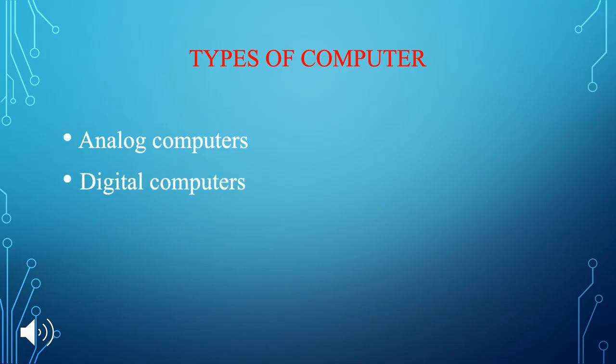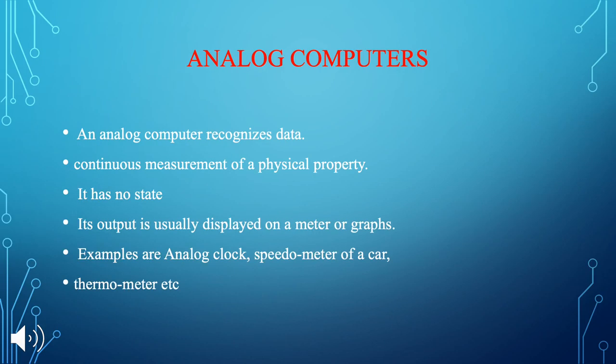There are two types of computers: analog and digital. Analog computers recognize data through continuous measurement of physical properties. They have no discrete states, and their output is usually displayed on meters and graphs. Examples of analog computers include the speedometer of a car, thermometer, and so on.